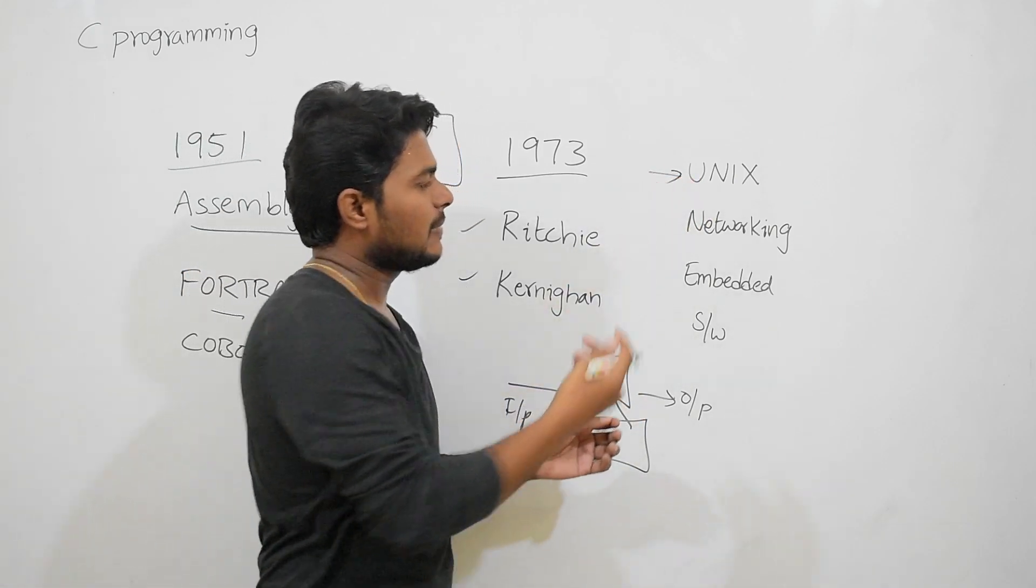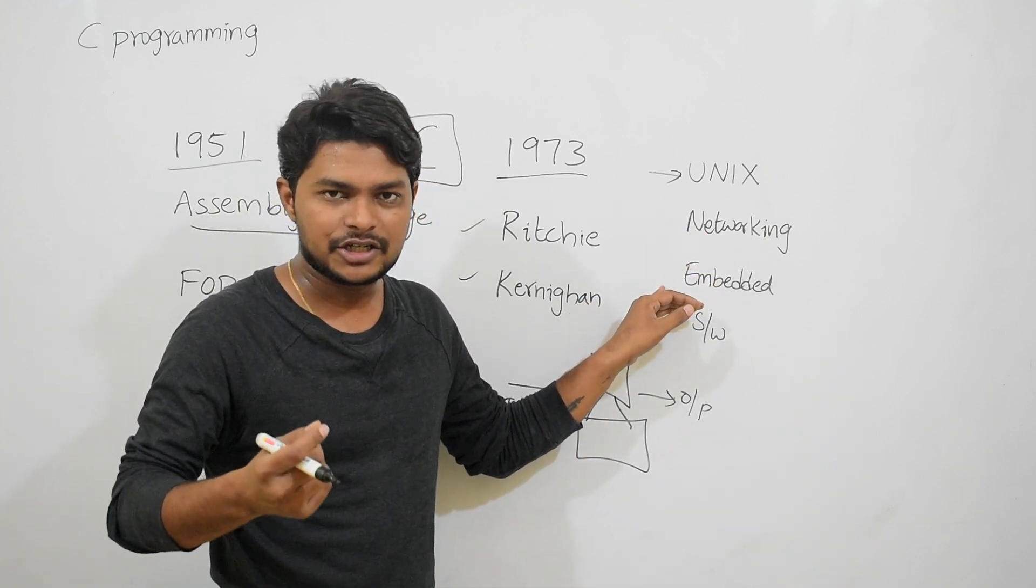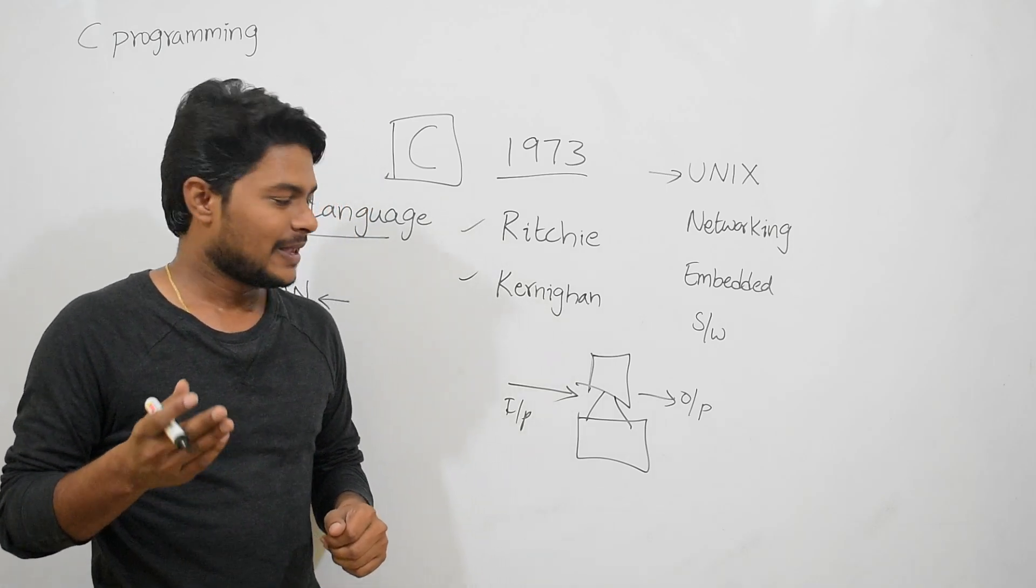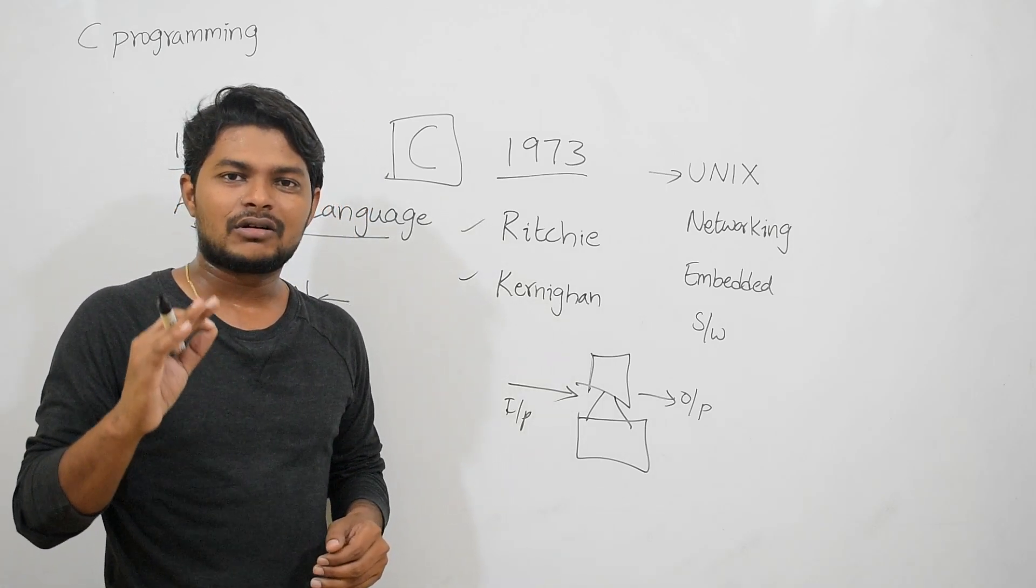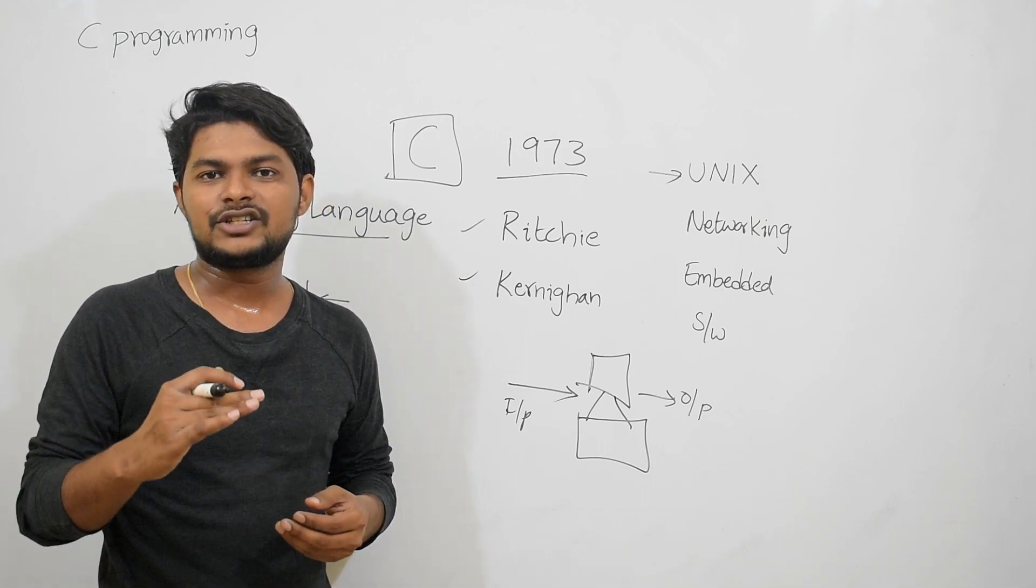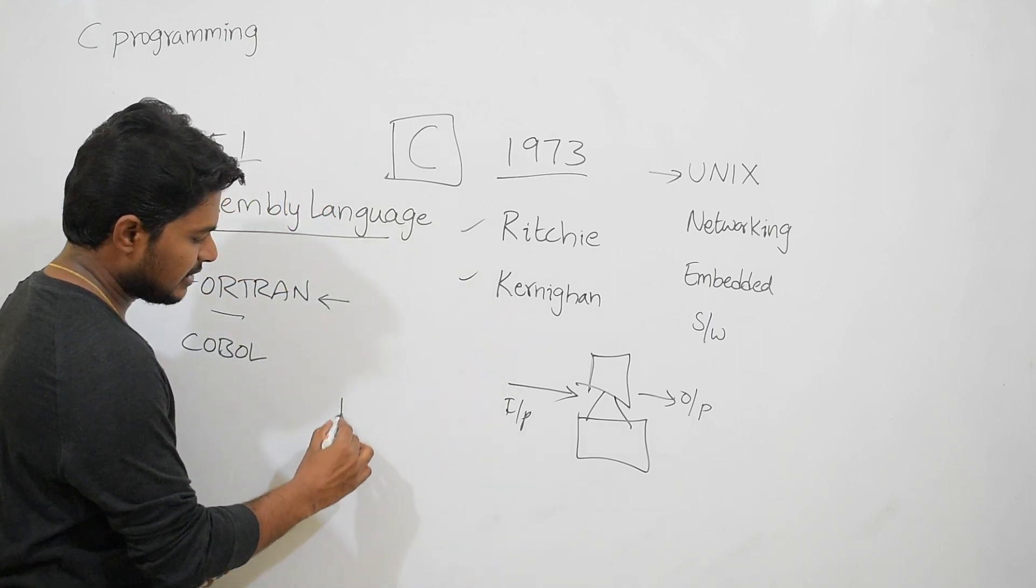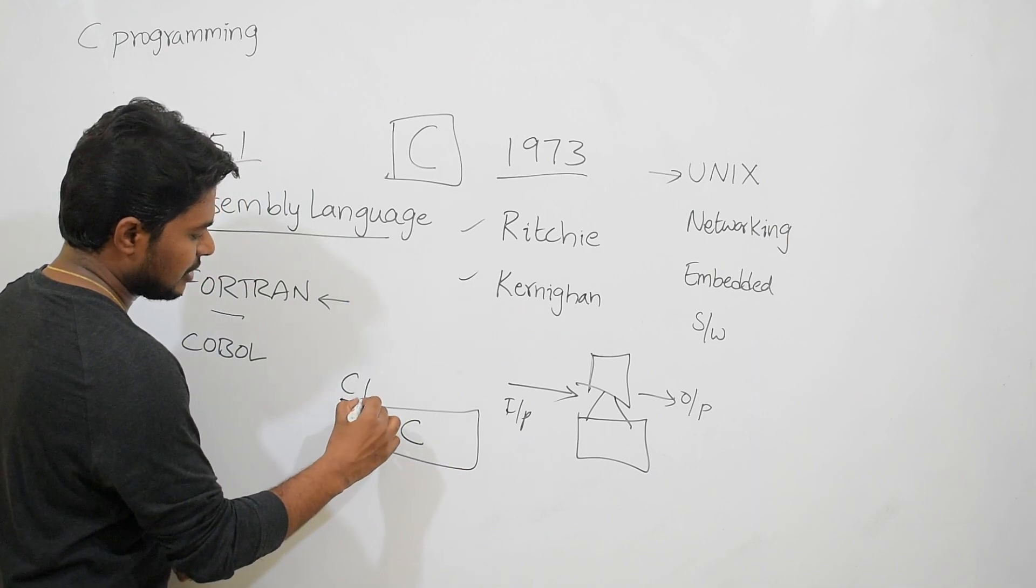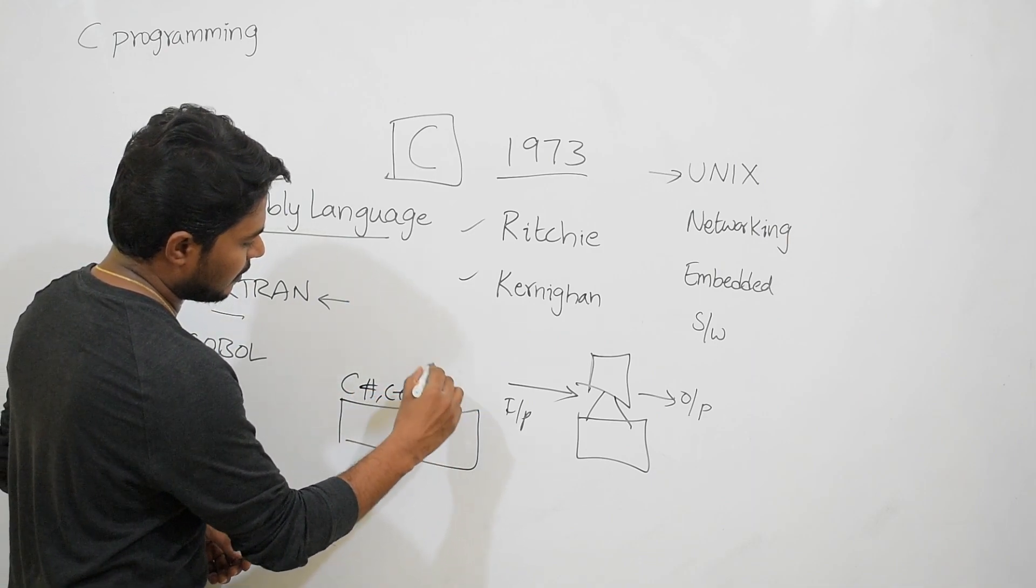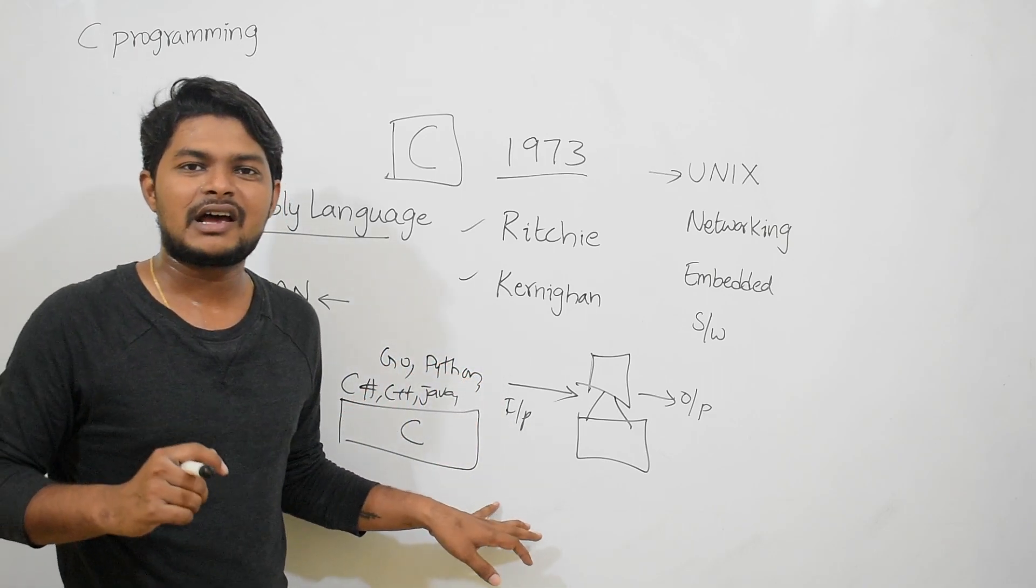Unix operating system was completely rewritten using C programming language, along with all networking components and embedded systems. Based on C programming language, many new programming languages have been invented like C#, C++, Java, Python, Go - numerous languages have taken birth.